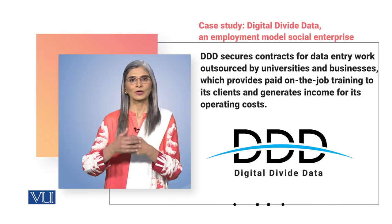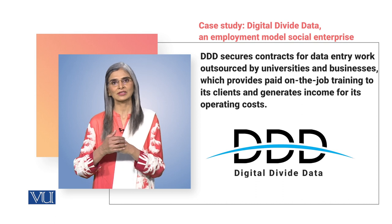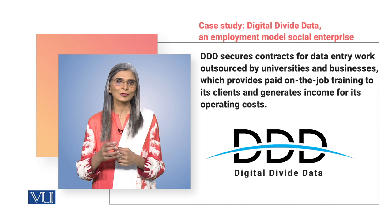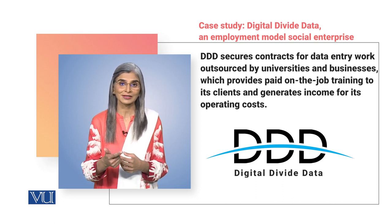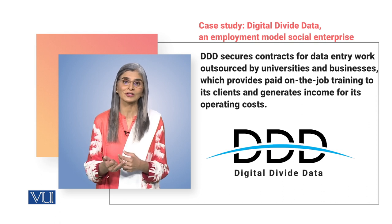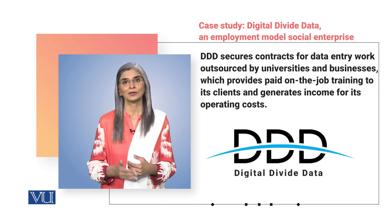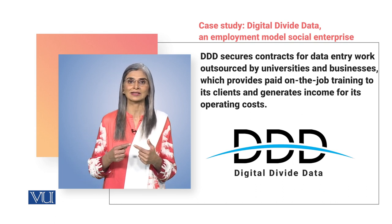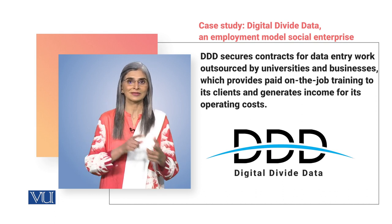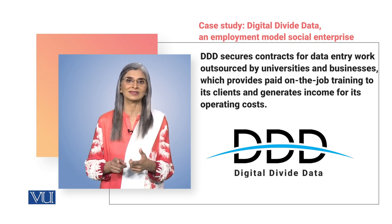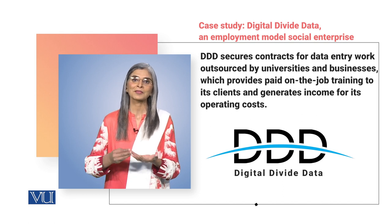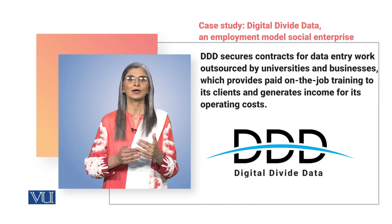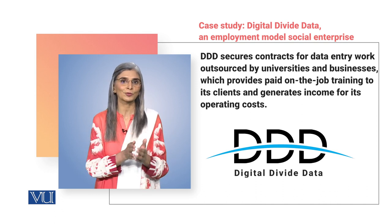For data entry recruitment, the effort was to prioritize the most vulnerable. A regular business enterprise would hire people who could learn quickly, had better physical ability, better situations, prior literacy or qualifications. In contrast, because DDD is a social enterprise, its purpose was to create employment for vulnerable populations — those who face the highest barriers to entering the employment market, whether due to lack of skills or other challenges. The most vulnerable were selected on a priority basis.